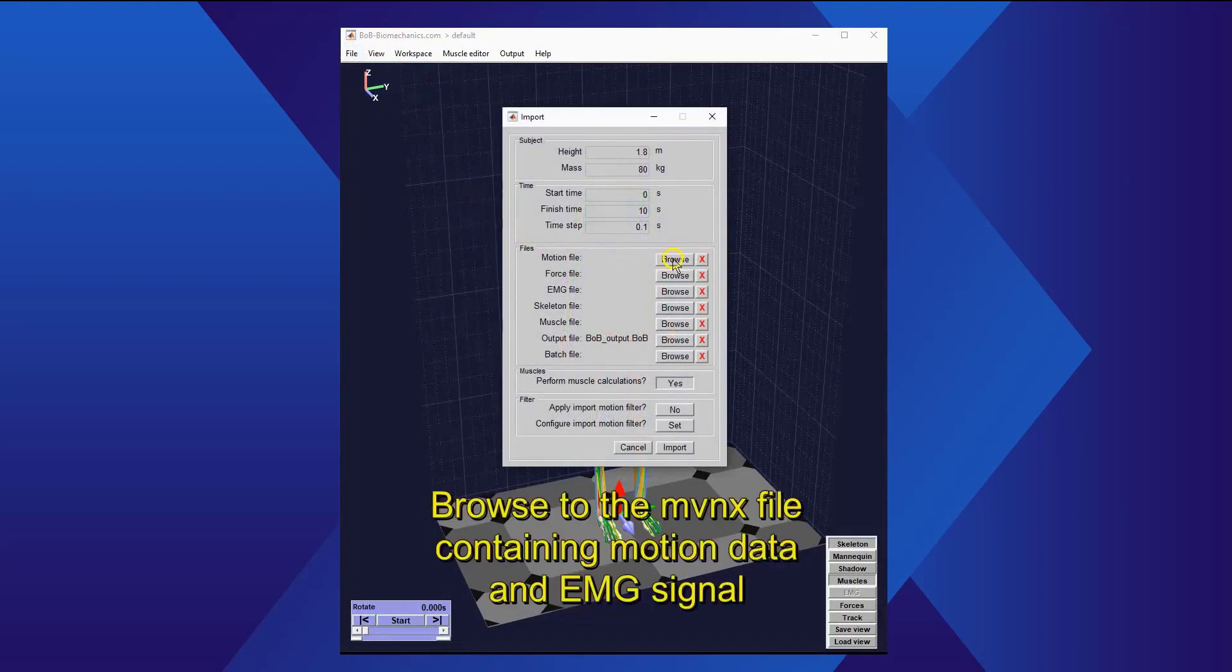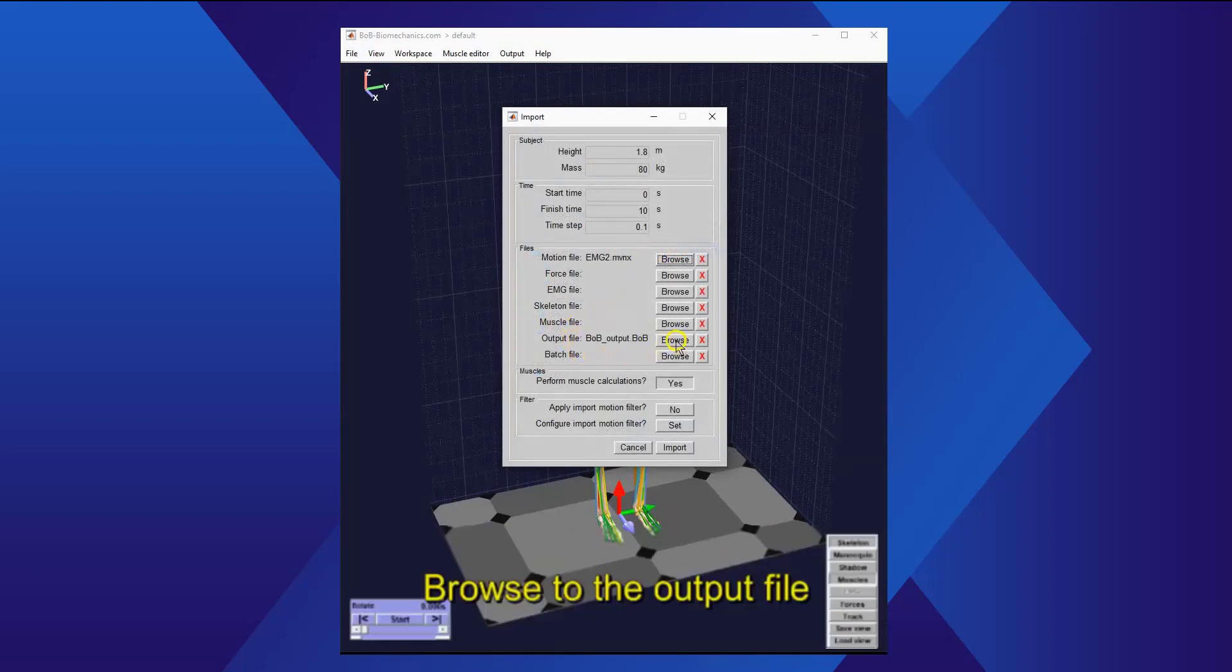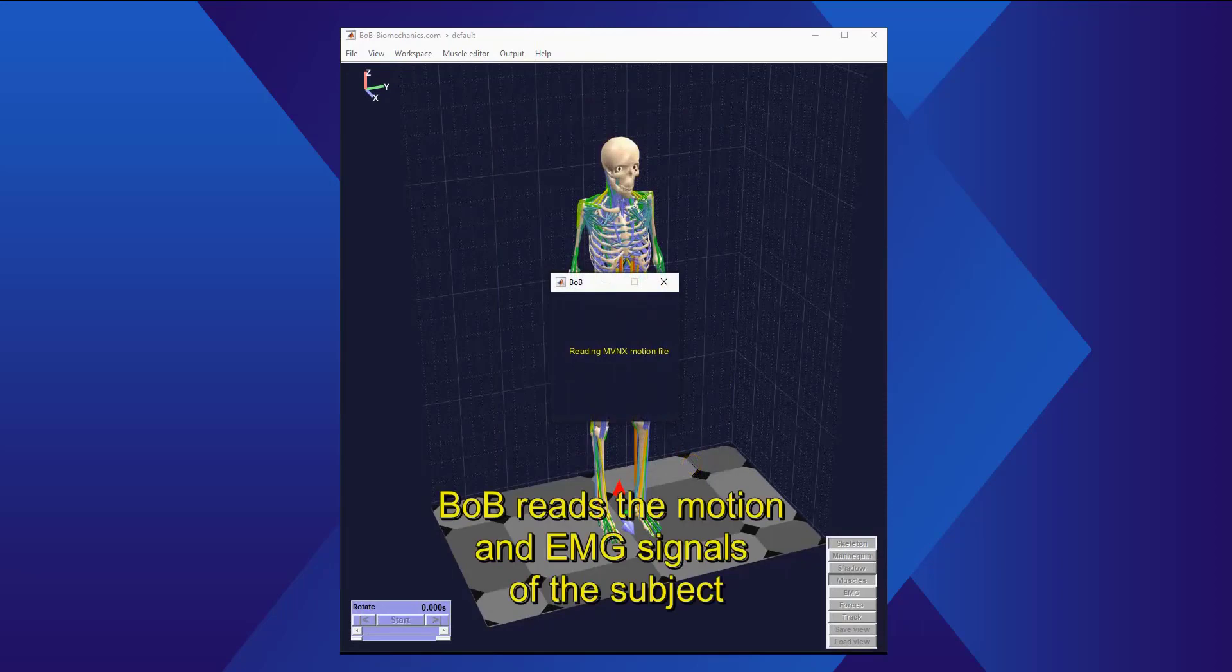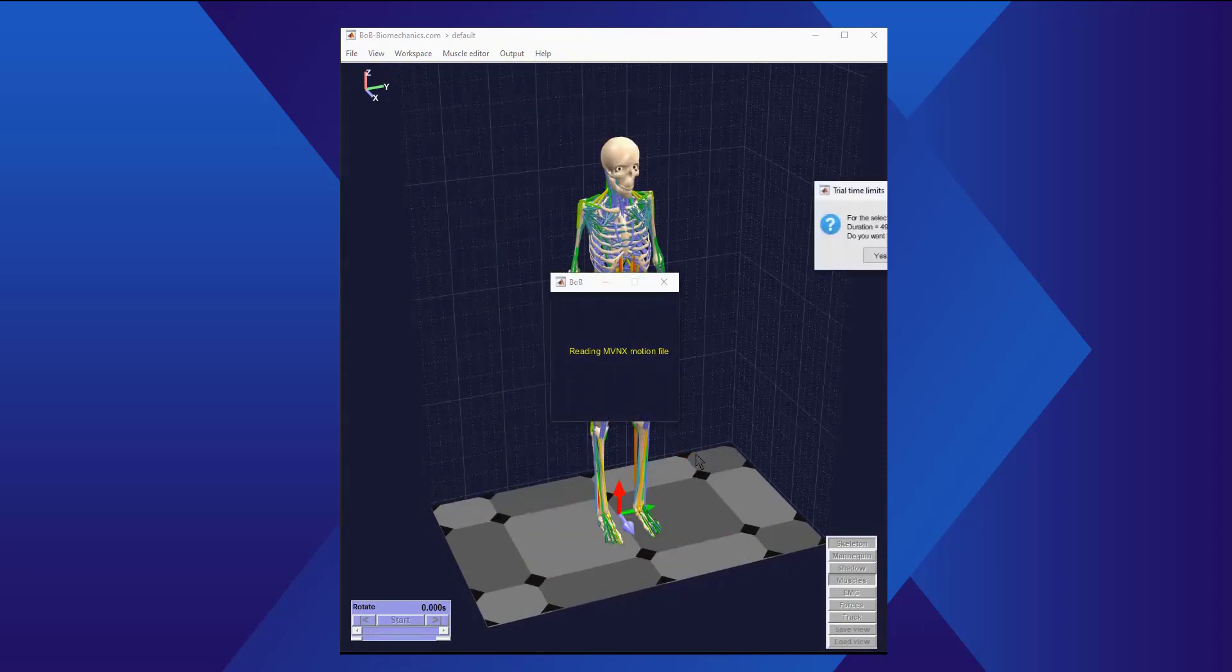Browse to the MVNX file containing motion data and EMG signal. Browse to the output file and click Import. Bobb reads the motion and EMG signals of the subject.